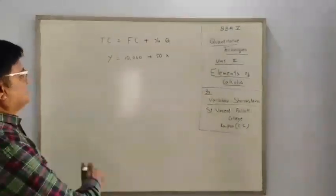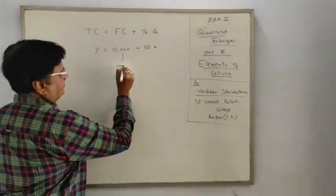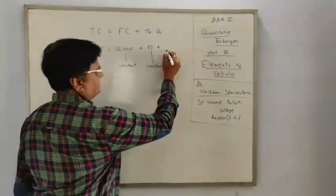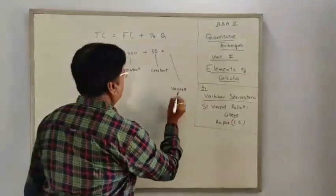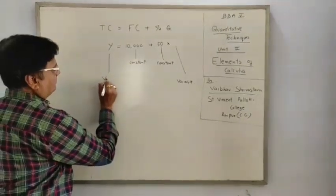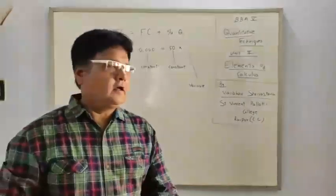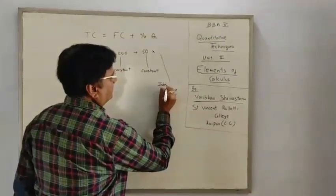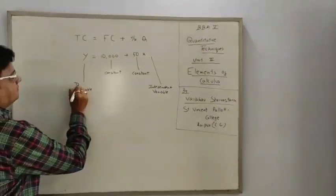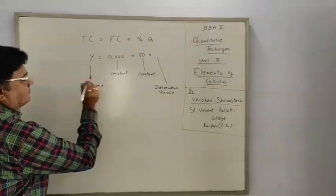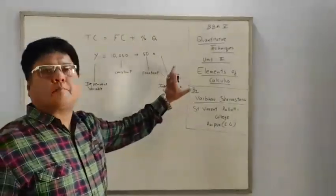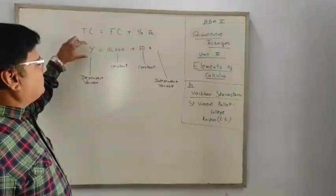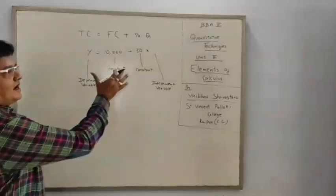Now, the interesting thing in this equation is that 10,000 is constant, 50 is also constant, X is variable, and Y is also variable. The difference between these two variables is that X is independent and Y depends on X. Y will completely depend upon X. X is quantity — we can move it up or down — but the total cost will depend upon that. So that relationship is a relationship of function.